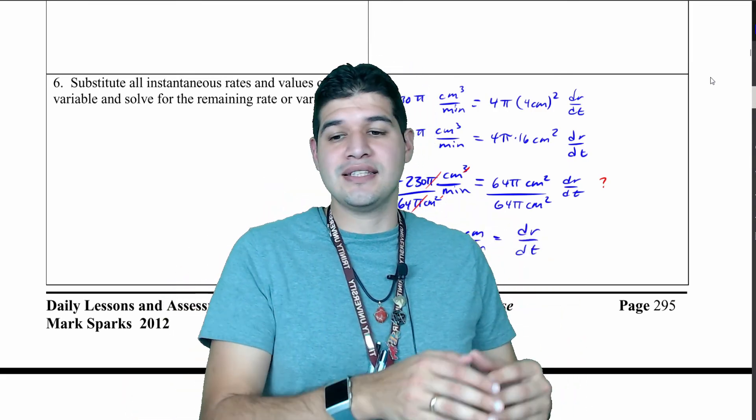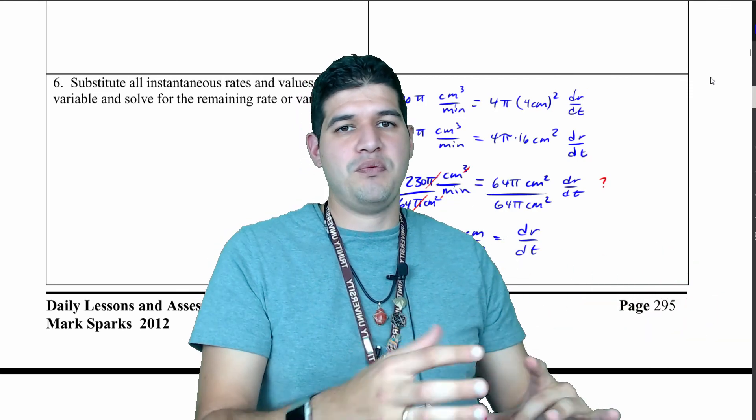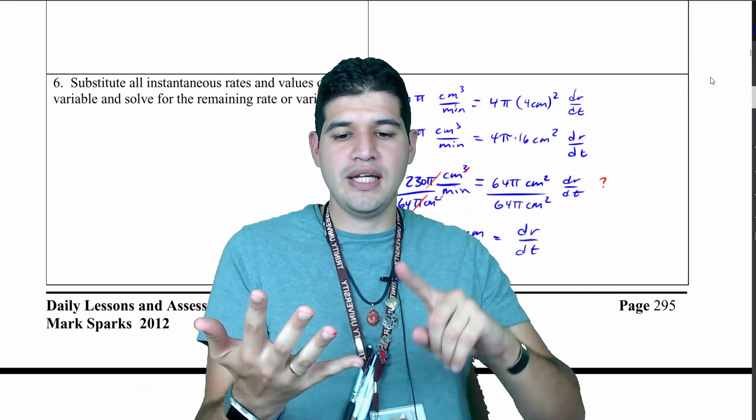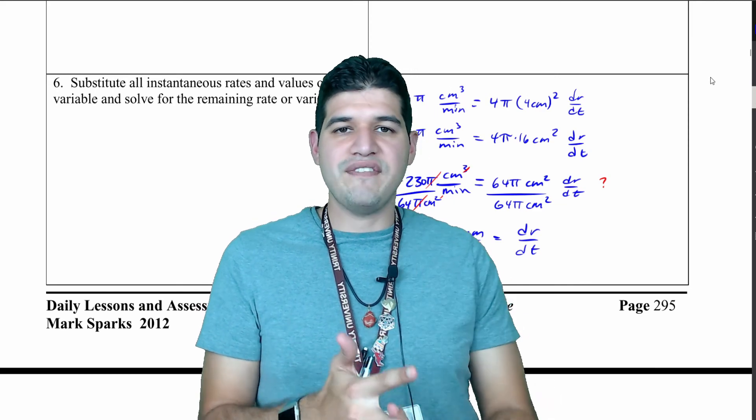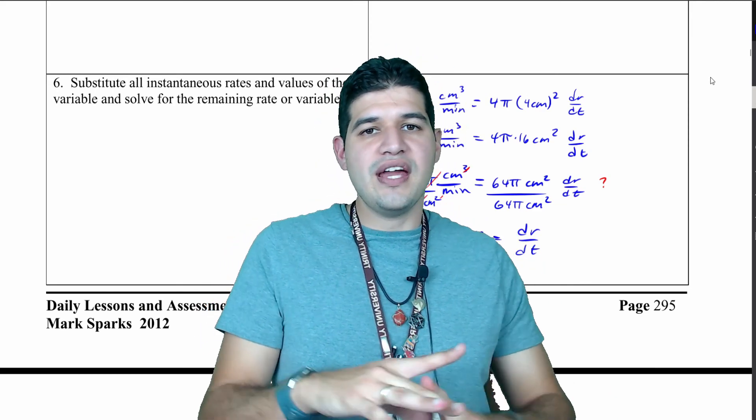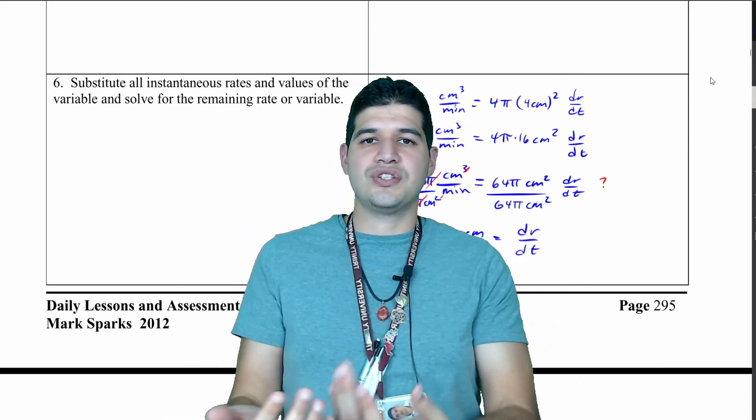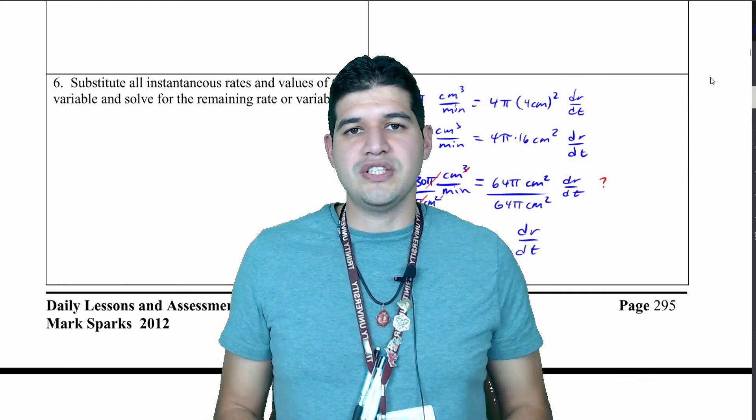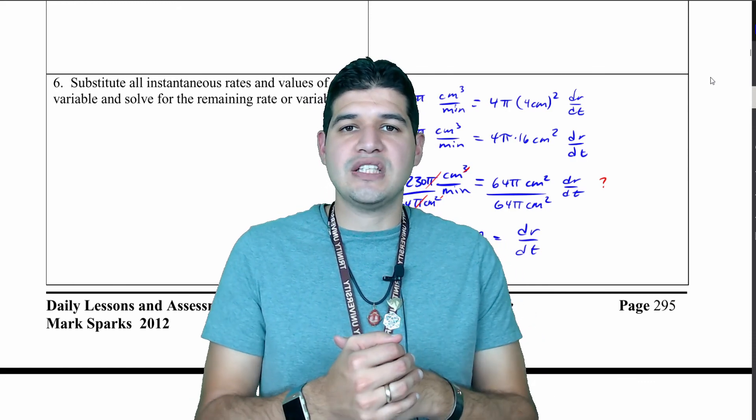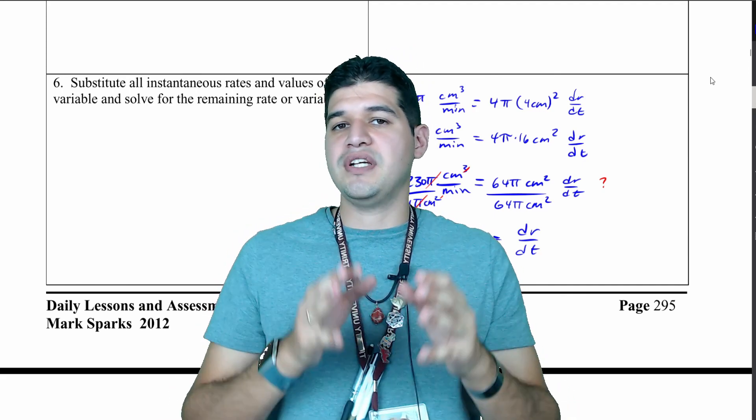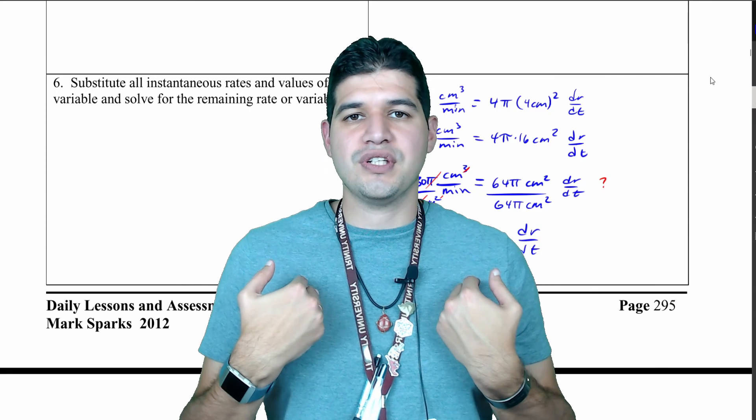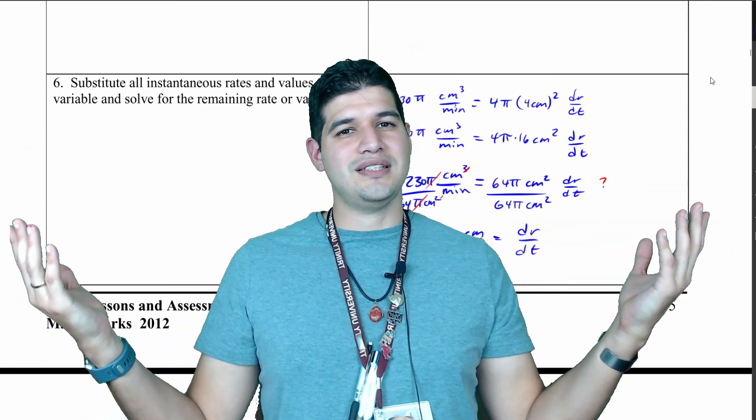That's going to be the first problem that you're going to see with related rates. We're going to look at a lot more like this, breaking it down in the same way: reading the problem closely and identifying what variables you need, taking the derivatives implicitly, and then substituting our values and solving for what is missing. So stay with it in the next video. There's going to be a lot more examples. If you do need any help on this example, if you have any questions, please reach out to me. I'm Mr. Hernandez, and this was Mr. Hernandez Teaches.